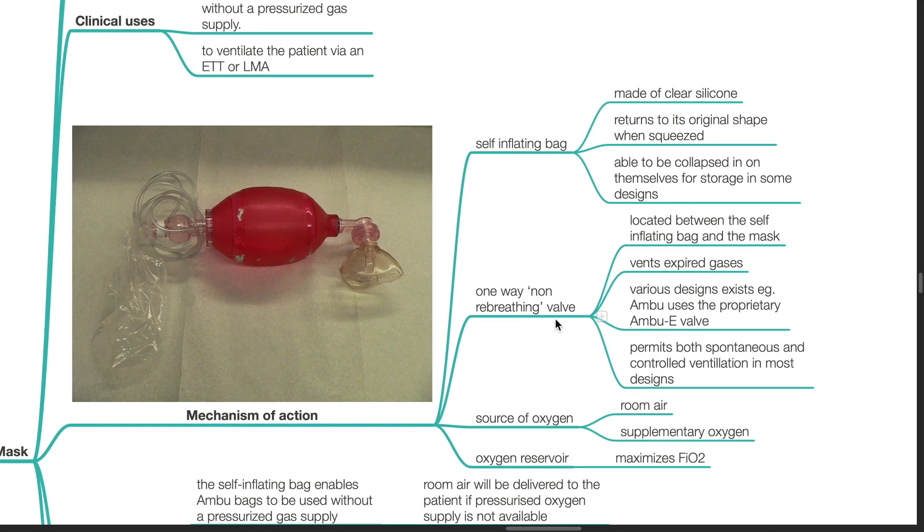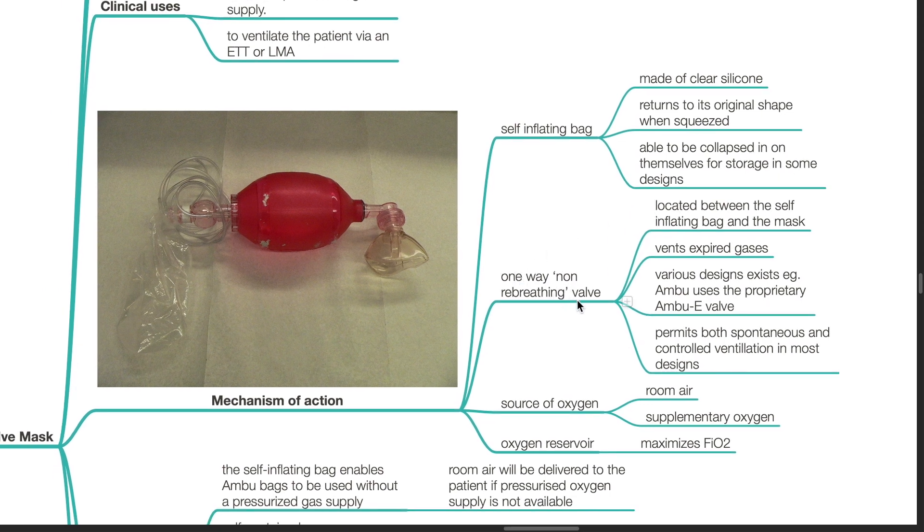Mechanism of action. It has a self-inflating bag made of clear silicone that returns to its original shape when squeezed. There is a one-way non-re-breathing valve located between the self-inflating bag and the mask that vents expired gases. This valve permits both spontaneous and controlled ventilation in most designs. Source of oxygen can either be room air or supplementary oxygen. Oxygen reservoir maximizes FiO2.